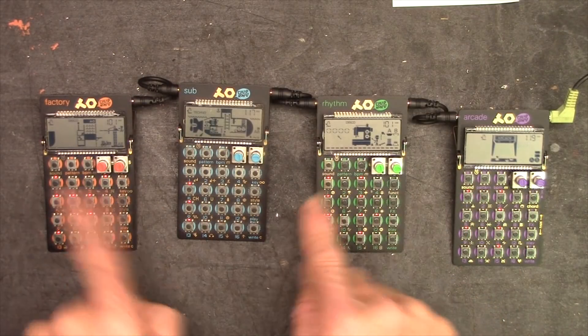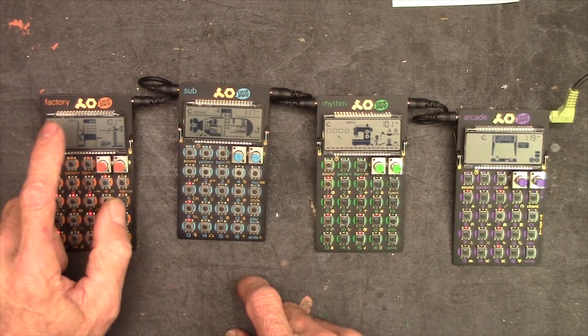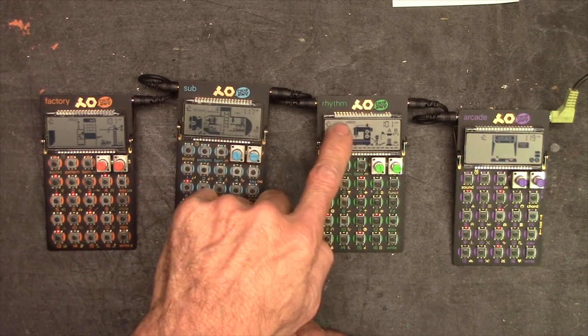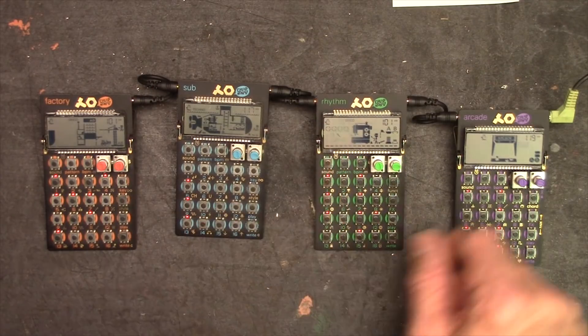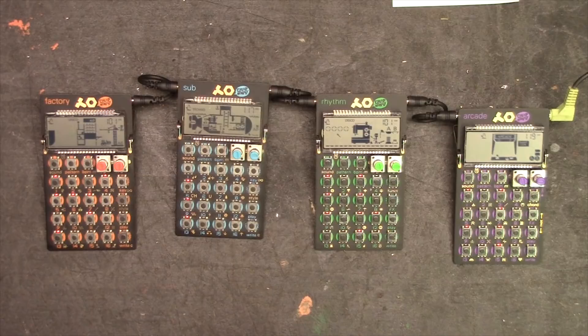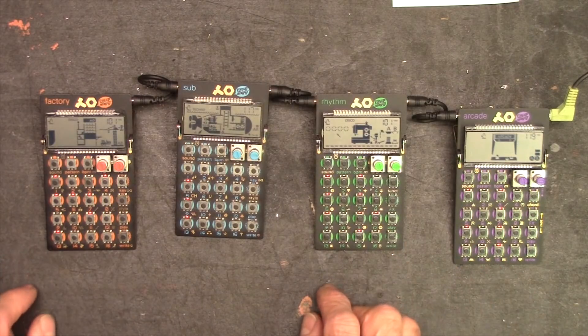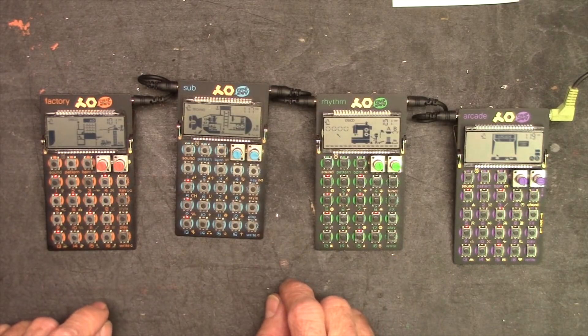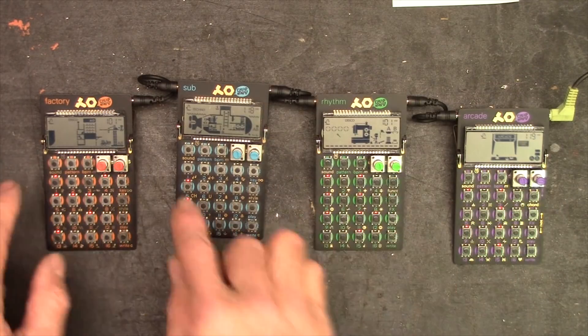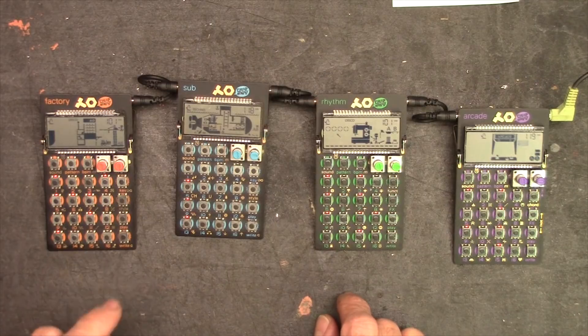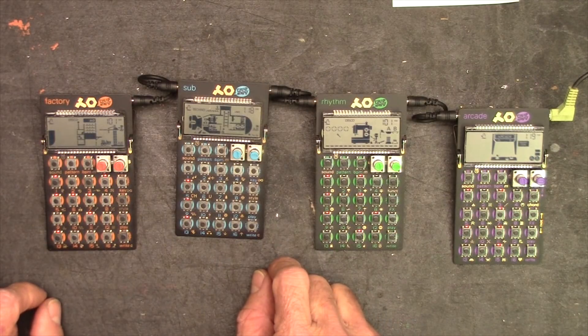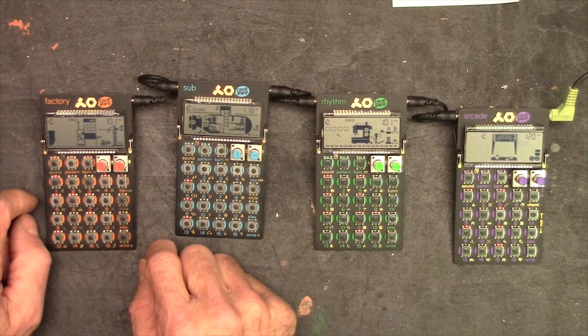Here they are, the Pocket Operators - as in PO, the model numbers. This is the PO-16 Factory, the PO-14 Sub, the PO-12 Rhythm, and the PO-20 Arcade. Each one of them has very unique sounds and patterns already built in. There are other videos on YouTube explaining in great detail how to use these individually, I will link to one of those later on.